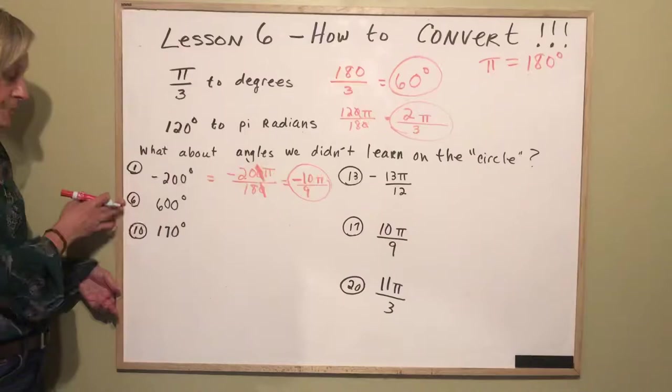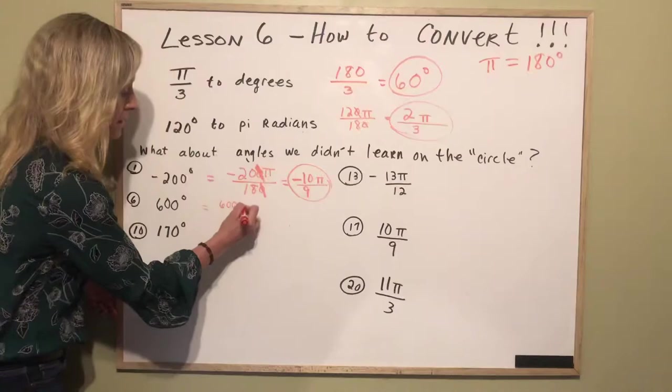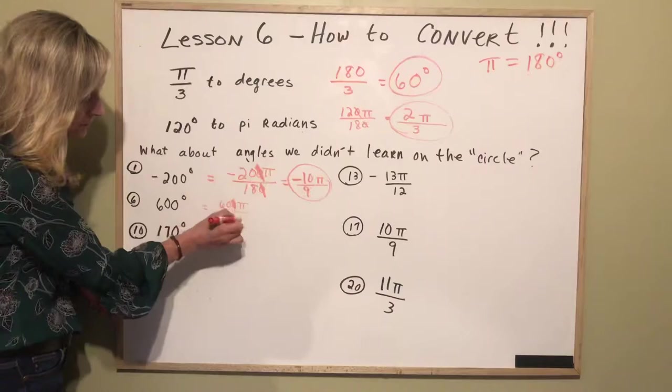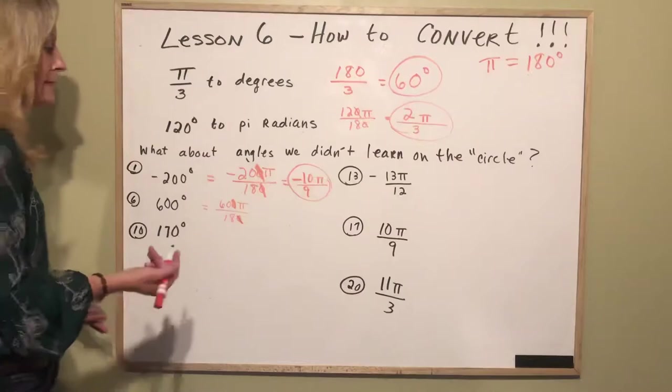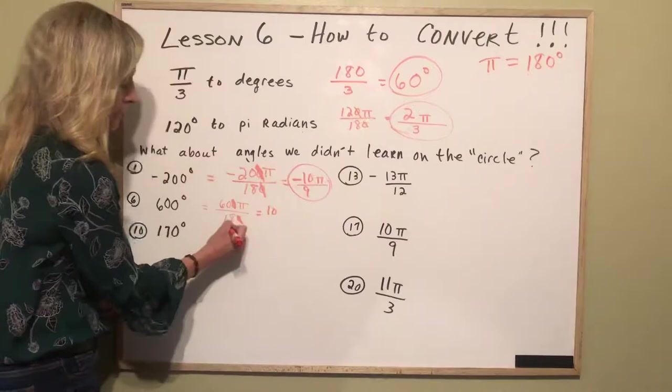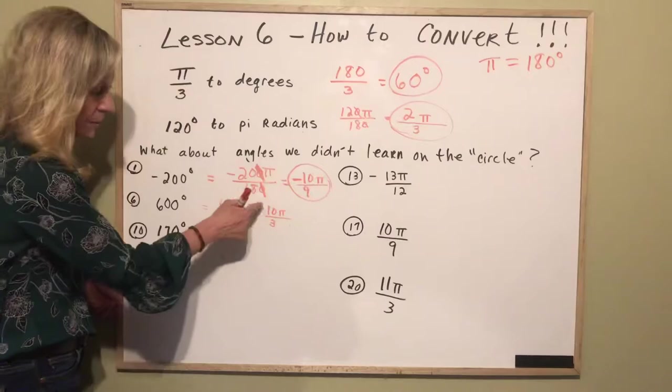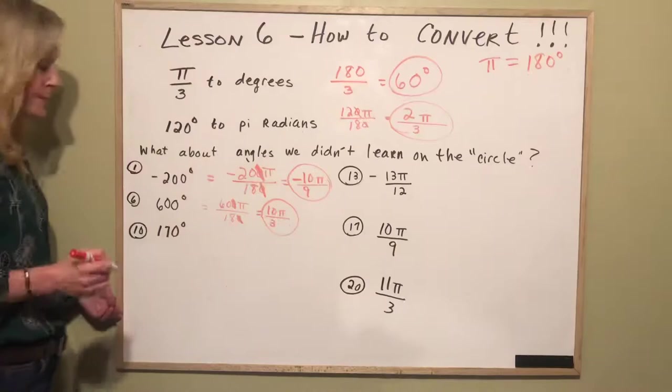How about number 6? 600 degrees. So we go 600 times pi over 180 and I can cancel one of the zeros. Now 60 and 18 are obviously both divisible by 6. 60 divided by 6 is 10. 18 divided by 6 is 3 pi and then just check, no there's nothing else that divides both 10 and 3 so it's 10 pi over 3 is the answer.